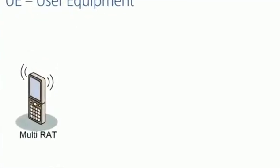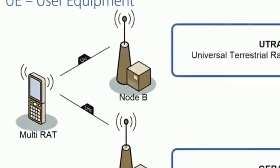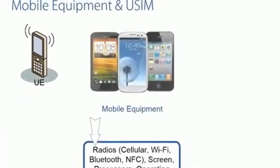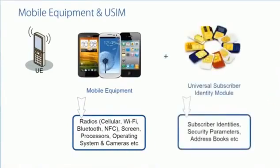Most UMTS devices support multiple technologies. For example, they can connect to UMTS, but they can also connect to GSM, GPRS, or the GRAN. The mobile is split into two parts. The first is the mobile equipment — this is all the hardware, including the radio, the processors, the screen and camera, etc. The other part is known as a subscriber identity module. Specifically in UMTS, it's called the USIM, Universal Subscriber Identity Module. This includes subscription information as well as security information, but it can also include address books, etc.